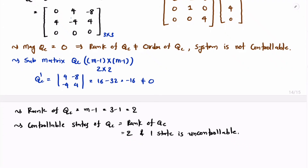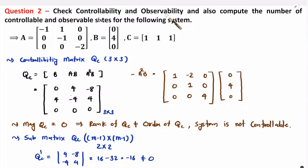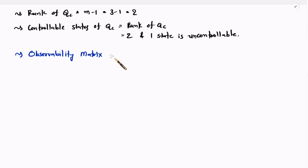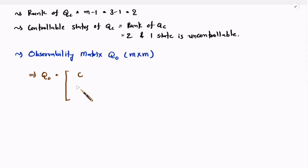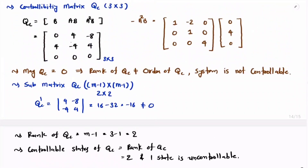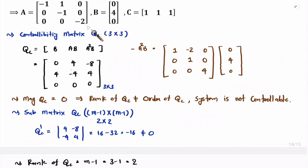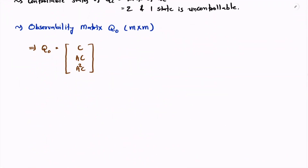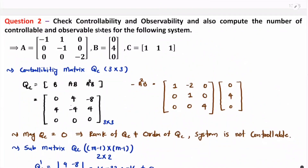Now we need to check observability. To identify observability, first we identify the observability matrix QO, which has order M×M, i.e., 3×3. The observability matrix is calculated as [C; AC; A²C]. Based on C and A we can compute each part.